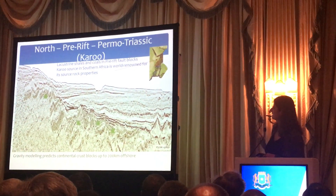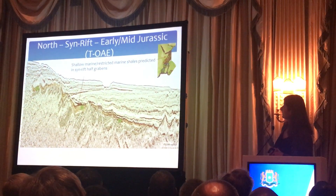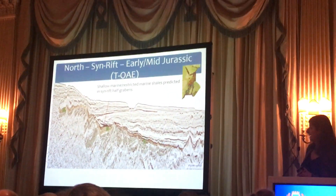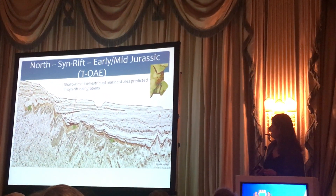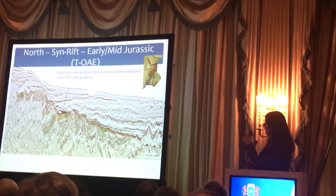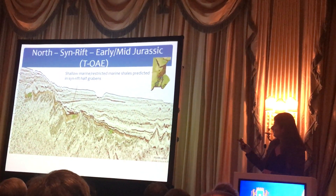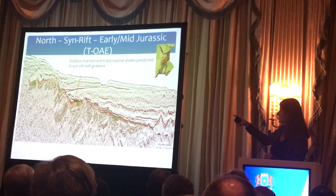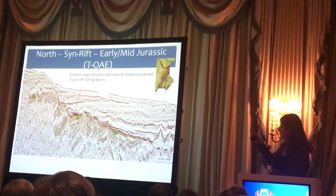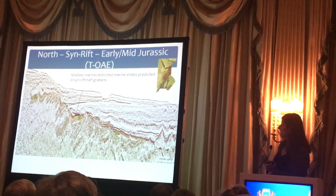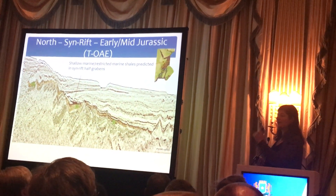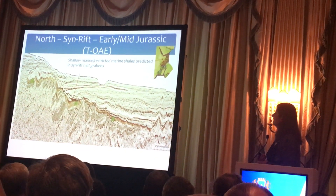If we move up the stratigraphic column, we've now drifted Madagascar away from Somalia and we have shallow marine restricted conditions. So we would expect that in the syn-rift stratigraphy we would see the source rock — shown there in brown or orange-y colour, marked S for source rock. So a shallower source rock. Moving up the stratigraphic column, we have identified two potential source rock sequences.